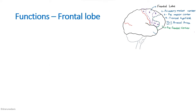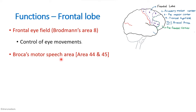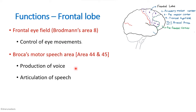The frontal eye field (Brodmann area 8) is responsible for the control of eye movements. The Broca's motor speech area (areas 44 and 45) is responsible for the motor part of speech — it controls the muscles of the lips, tongue, pharynx, and larynx, and is therefore responsible for the articulation of speech.